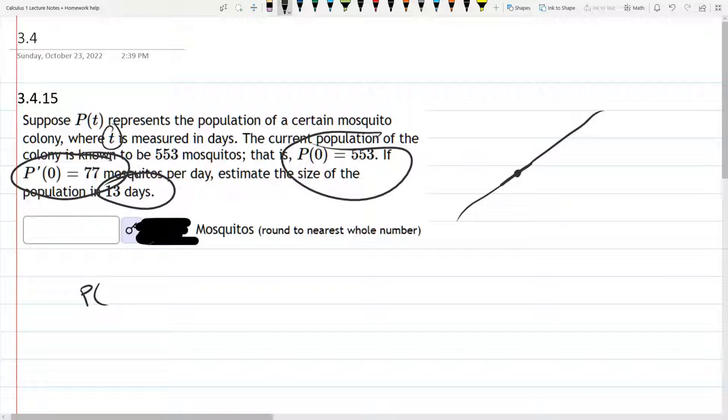So t is our variable, P of t equals, let's just use the regular mx plus b, but of course we have to use t, not x. Alright, that's P of t.